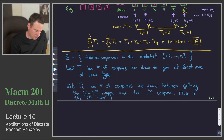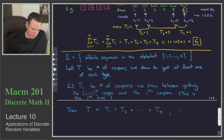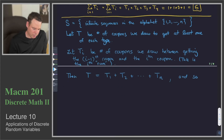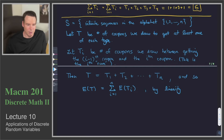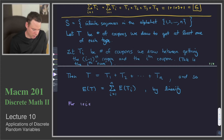Our key observation is that the random variable T we are interested in is just the sum of these run variables T_i. And so the expected value of T equals the sum of the expected values of T_i for i from 1 to n, by linearity of expectation. Now we'd like to work out what the expected value of T_i is.